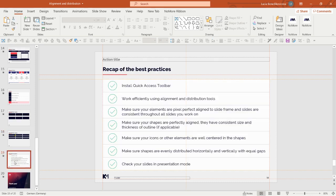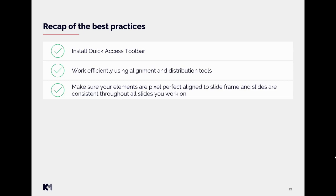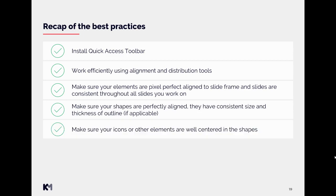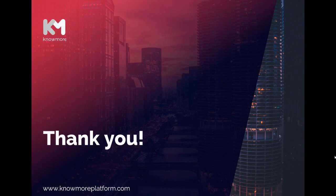Now for the final recap of best practices: install our quick access toolbar to speed up your work. Use alignment and distribution tools efficiently. Ensure elements are pixel-perfect aligned to the slide frame and consistent across all slides. Make sure shapes have consistent size and outline thickness. Ensure icons and elements are well centered in their shapes. Make sure shapes are evenly distributed with equal gaps, and always check your slides in presentation mode. Thank you very much for watching.